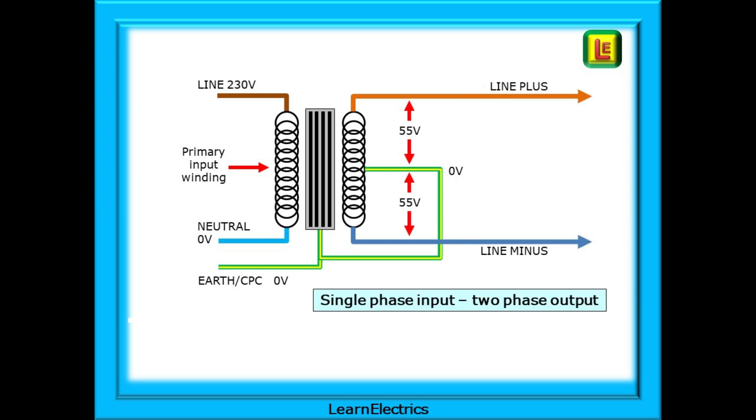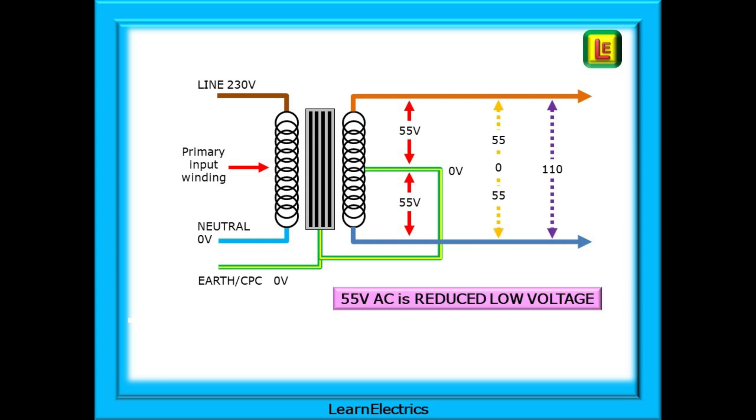So we have a single phase input and a two phase output. With reference to the earth point at the centre of the windings, each of these phases is 55 volts and they are always electrically opposite each other. This is shown more clearly here. Whilst one phase is at plus 55 volts, the other is at minus 55 volts, and together they give us 110 volts output for the drills, saws or whatever. We call this a 55-0-55 volt system.